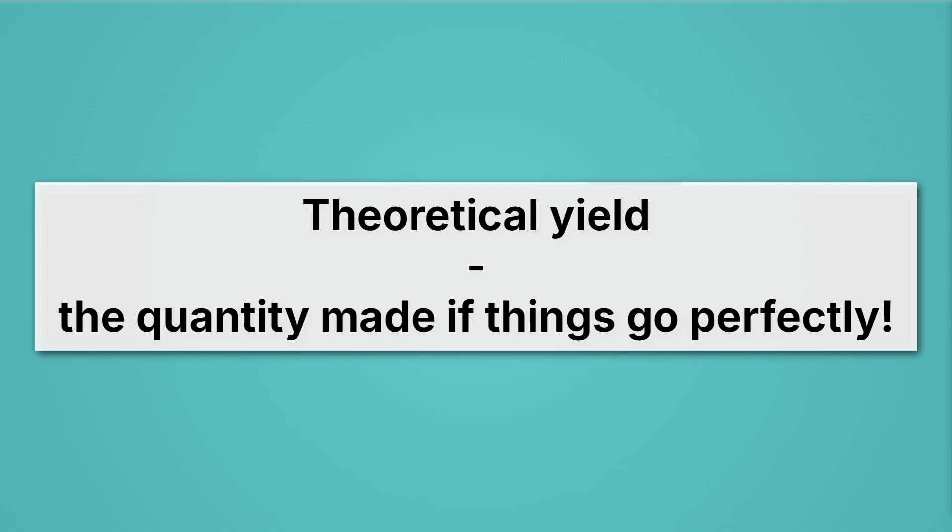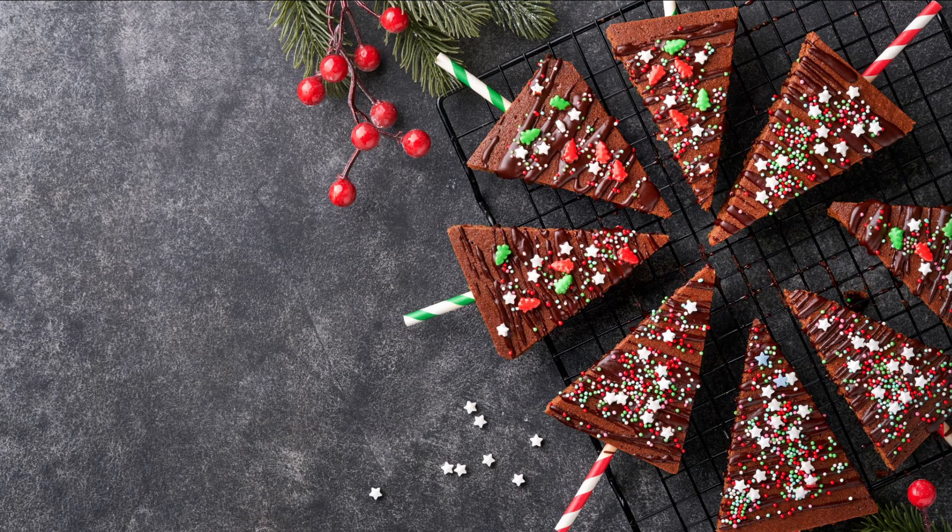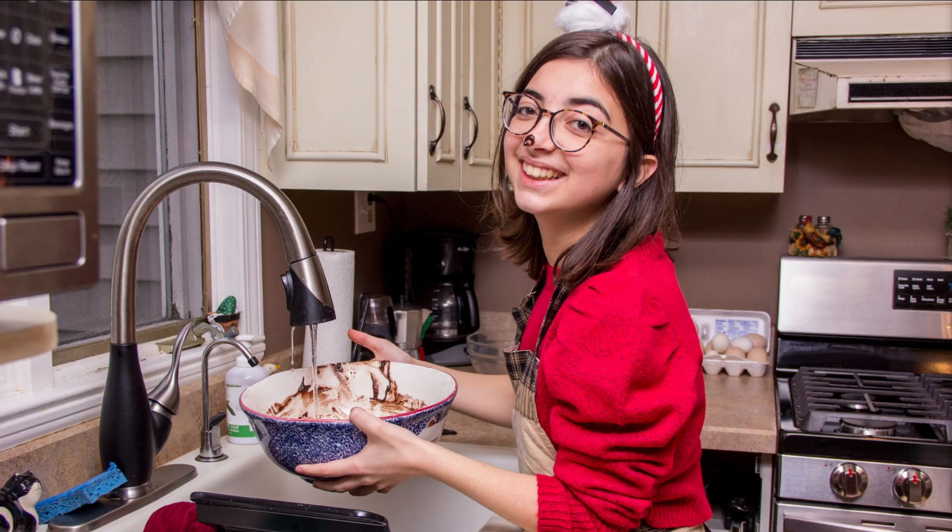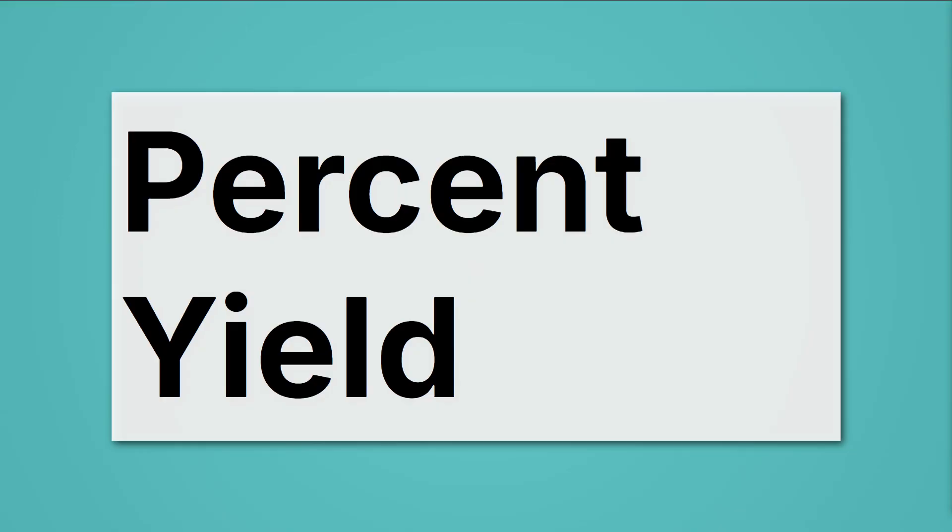Sadly, though, things don't go perfectly. Take, for example, these holiday brownies. My recipe said I was supposed to be able to make eight of them, but I only got seven. Why? Sometimes we accidentally waste some of the batter. Some of the batter is left over in the bowl, and even some on our nose. Sad times. We didn't get to make all the brownies we should have. We can compare how much we should have been able to make to how much we actually got with percent yield. Let's practice calculating that now.